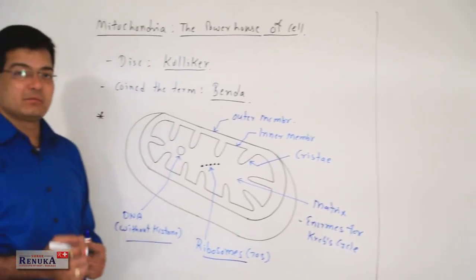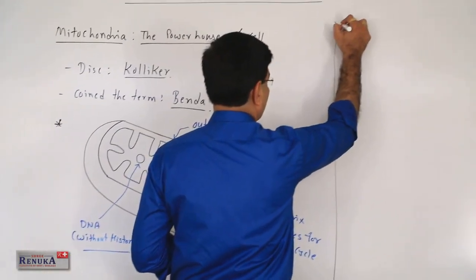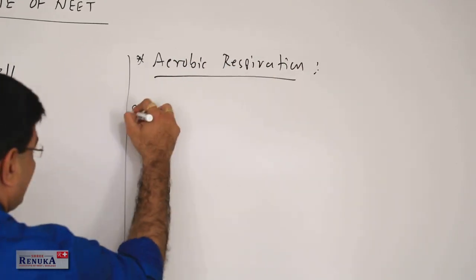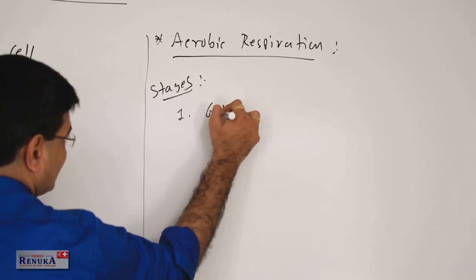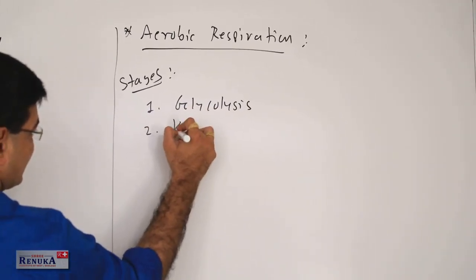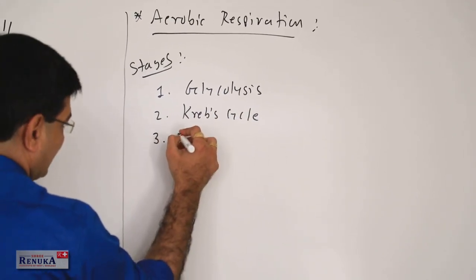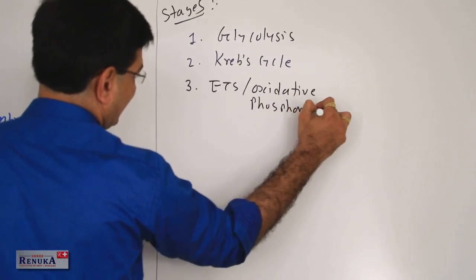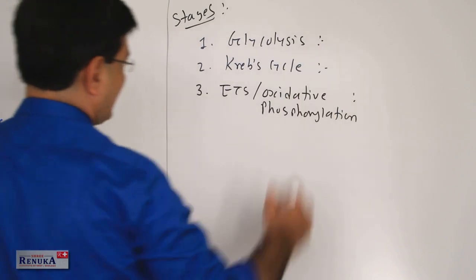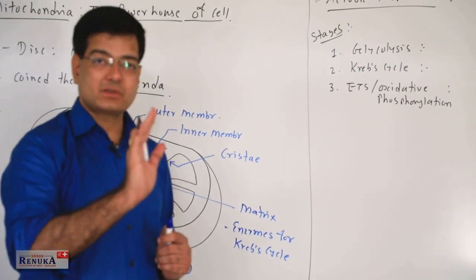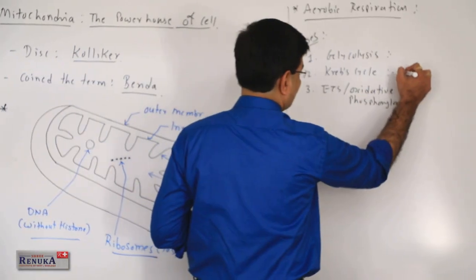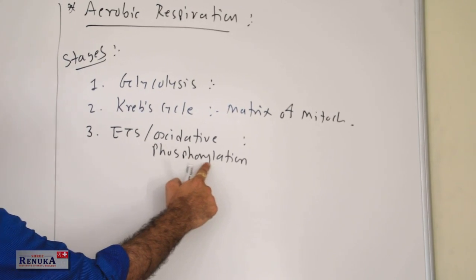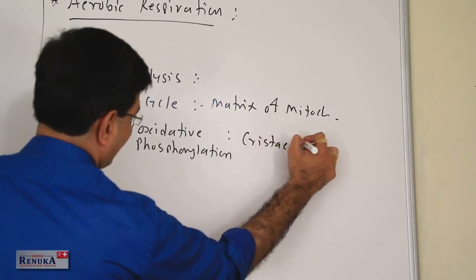Mitochondria is the cell organelle concerned with respiration, specifically aerobic respiration. It has three stages: first is glycolysis, second is the Krebs cycle, and third is ETS or oxidative phosphorylation. Glycolysis occurs in the cytoplasmic matrix — mitochondria is not concerned. Krebs cycle occurs in the matrix of mitochondria, and the electron transport system or oxidative phosphorylation occurs on the cristae of mitochondria.